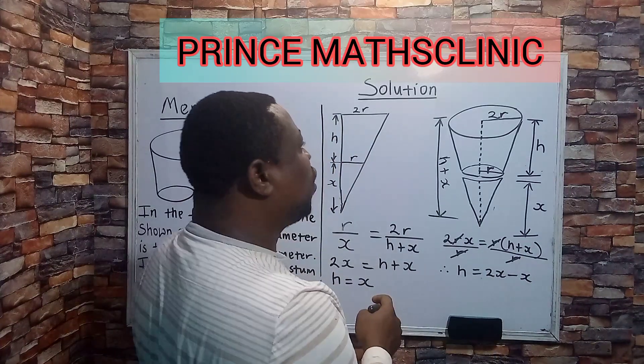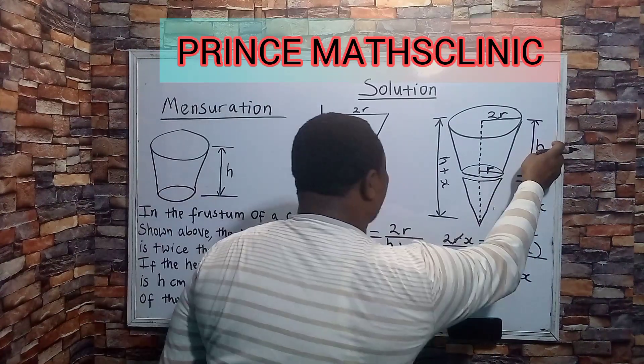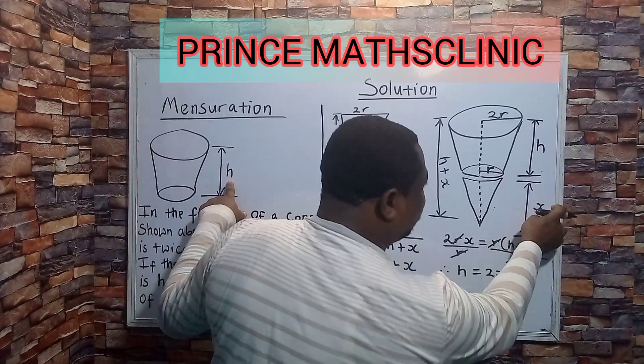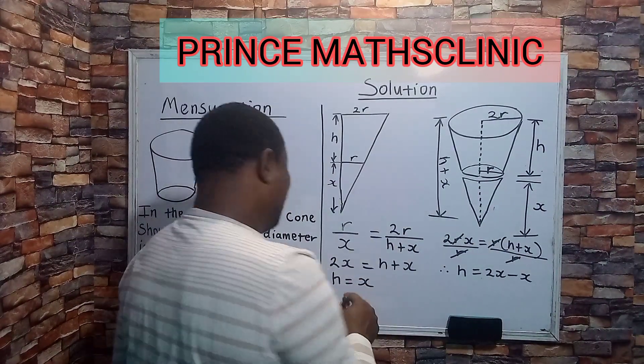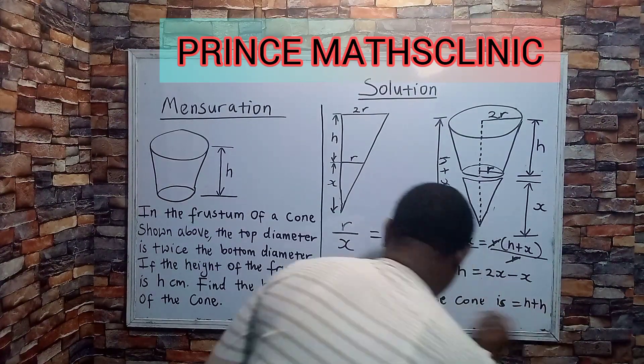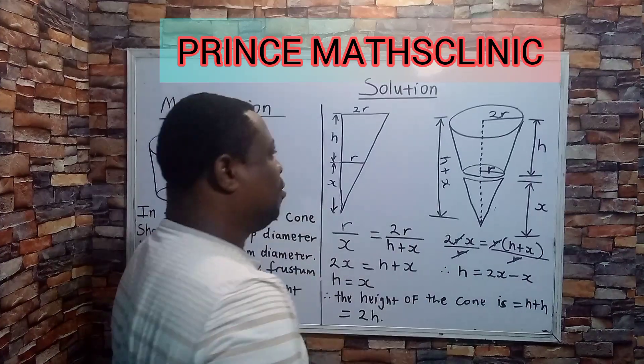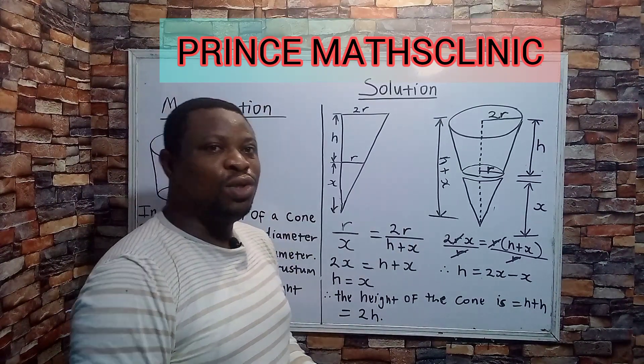And since we are looking for the height of the cone, I want to look for that height in terms of h because that is what we are giving. We only introduce x, right? So therefore, this h plus h, which is equals to what? 2h. That is the solution to this question.